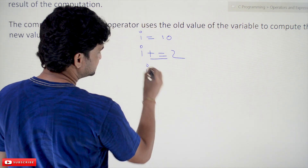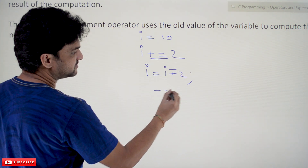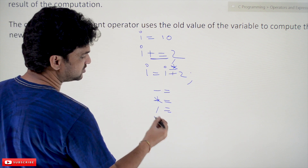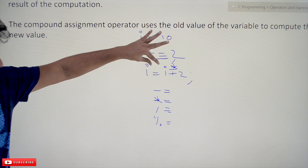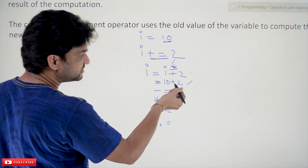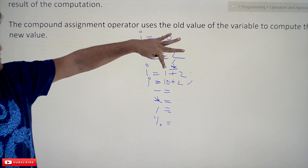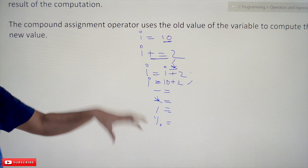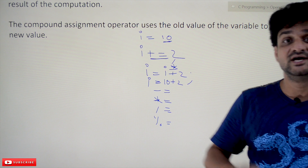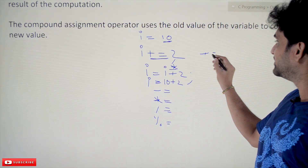If you expand I += 2, it is equivalent to I = I + 2. The short form of minus is -=, multiplication is *=, division is /=, and modulus division is %=. So the old value of I, which is 10, gets 2 added to it and the result — 12 — gets stored back (overwritten) into I. The new value of I uses the old value combined with the given operand. Compound assignment operators are very frequently used in C programming.